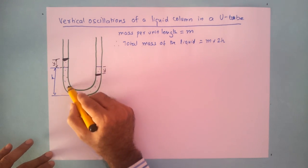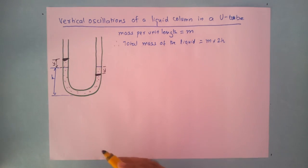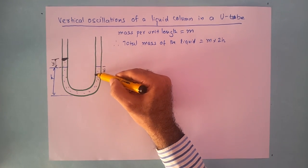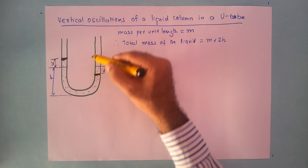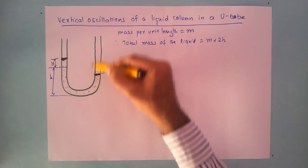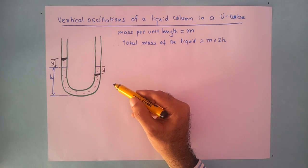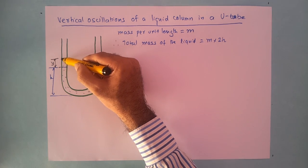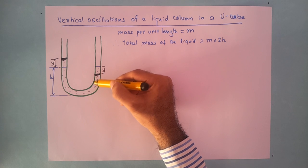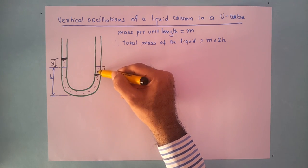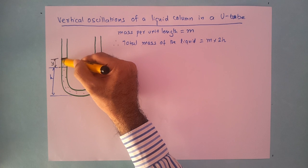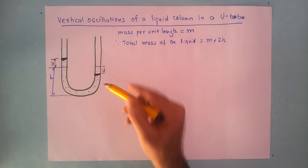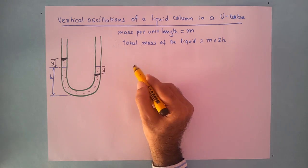We are studying the system at this particular instant when the liquid is displaced. When we release the force it will start performing oscillations. The liquid has a tendency to go back because of a restoring force that comes into play. There is a restoring force acting on this liquid which is trying to take it back in the original direction.